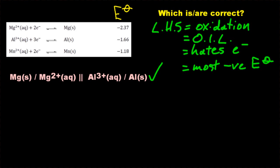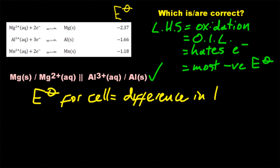So how do you work out the actual voltage of these things? Well, what you have to do is look at the difference between those standard electrode potentials - that E with a little standard sign, standard electrode potential. Just look at the difference between the two numbers. So what's the difference between those two? It's 0.71 volts. Fantastic.